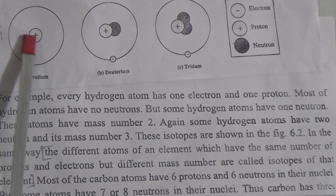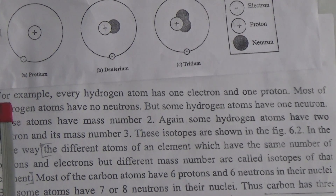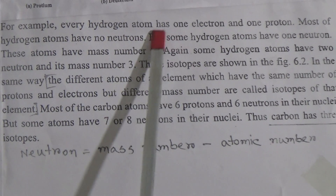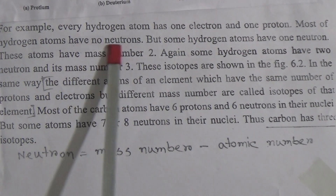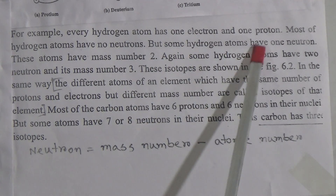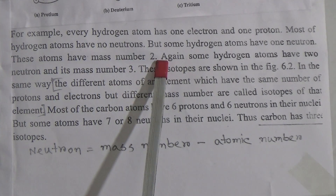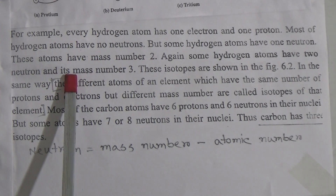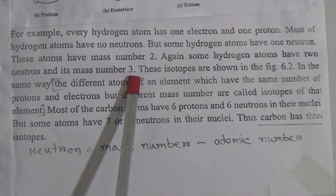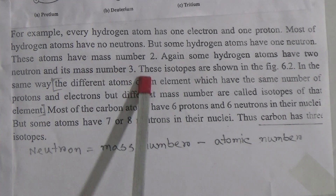And here, protium has no neutron — only 1 proton and 1 electron. For example, every hydrogen atom has 1 electron and 1 proton. Most hydrogen atoms have no neutrons, but some hydrogen atoms have 1 neutron. These atoms have mass number 2, because 1 proton plus 1 neutron equals mass number 2. Again, some hydrogen atoms have 2 neutrons and their mass number is 3 — that means 1 plus 2 equals 3, which is the mass number.